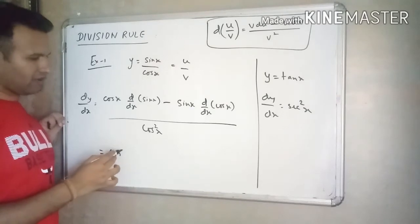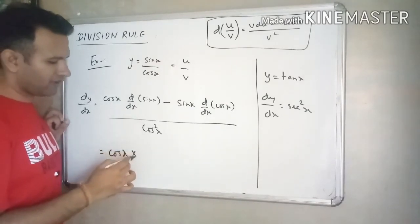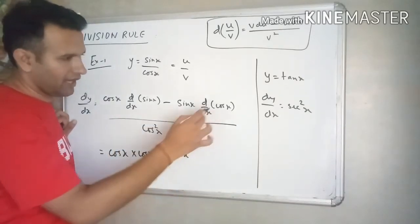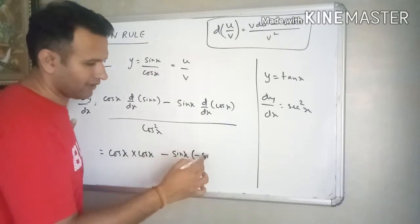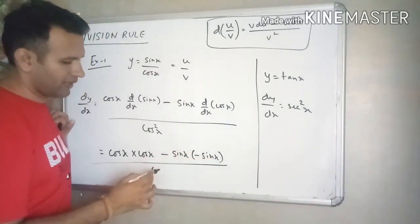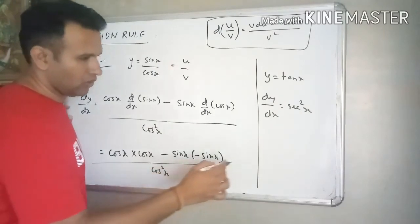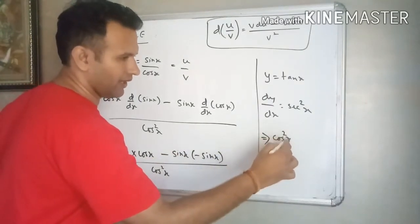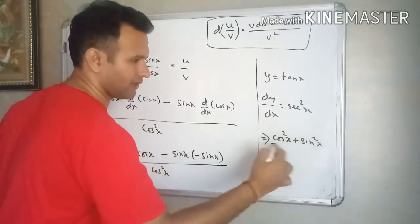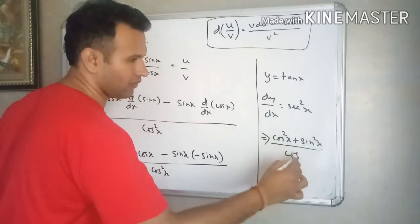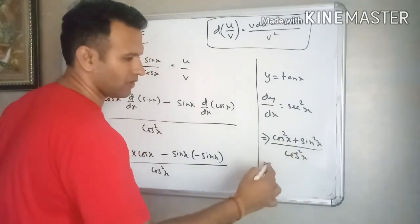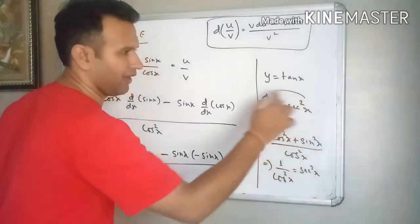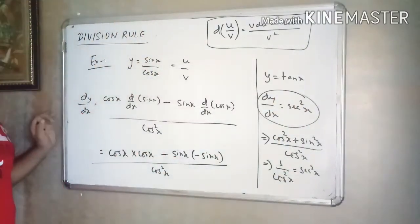Applying the formula: cos x times derivative of sin x, minus sin x times derivative of cos x, divided by cos square x. Derivative of sin x is cos x, and derivative of cos x is minus sin x. So we get cos x times cos x minus sin x times minus sin x, all divided by cos square x. This gives cos square x plus sin square x divided by cos square x. Since cos square x plus sin square x equals 1, the answer is 1 by cos square x, which is sec square x. So tan x's derivative is confirmed as sec square x.